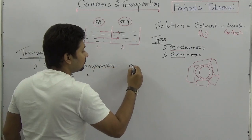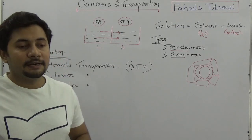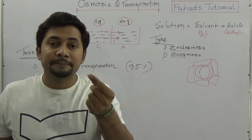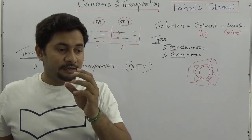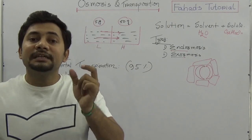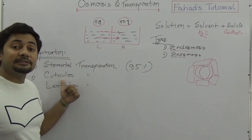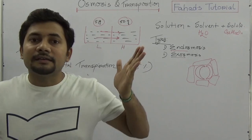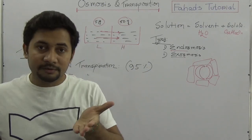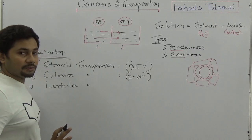Through the stomata, mostly 95% of transpiration occurs — this is stomatal transpiration. Cuticular transpiration occurs through the epidermis of the leaf. In the upper and lower surfaces of the leaf there is a layer made up of cutin, known as the cuticle. Through this cuticle some evaporation takes place, and this is called cuticular transpiration. Mostly two to three percent of transpiration occurs through the cuticle.